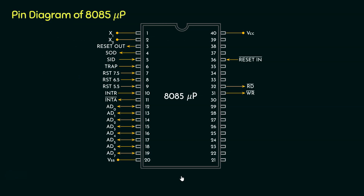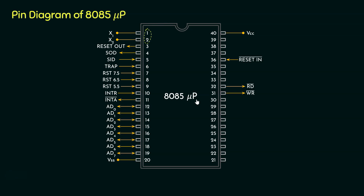Before we dive straight to the pins, let's quickly revise the pins we have learned so far. Pins 1 and 2 are used for the frequency — these two pins are connected to the crystal which is responsible for the frequency of the 8085 microprocessor, which happens to be 3 MHz. Thereafter, we have learned about pins 3 and 36. Pin 36 is the reset-in active-low pin, using which we can reset the 8085 microprocessor. Pin 3 is used for resetting out the peripherals connected to the 8085 microprocessor.